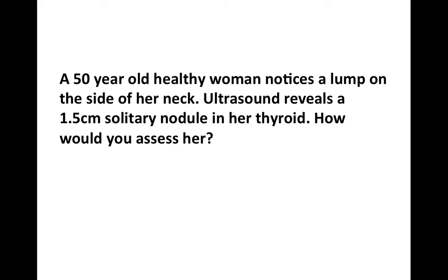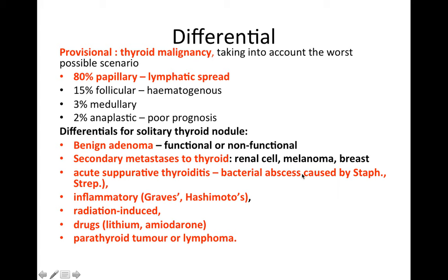My provisional diagnosis for this lady is thyroid malignancy. Taking into account the worst possible scenario, 80% of thyroid malignancies are papillary, 15% follicular, 3% medullary, and 2% anaplastic. Differentials for a solitary thyroid nodule include a benign adenoma — functional or non-functional — and secondary metastases to the thyroid, though rare, such as renal cell carcinoma, melanoma, and breast.